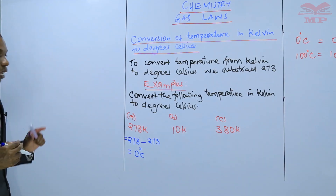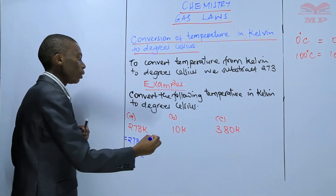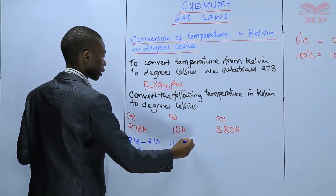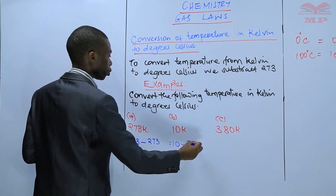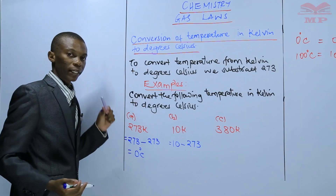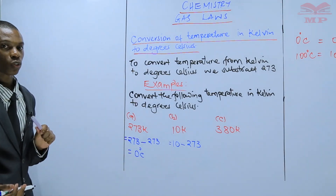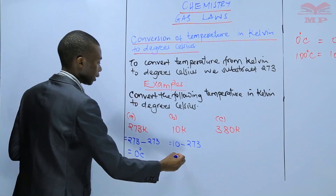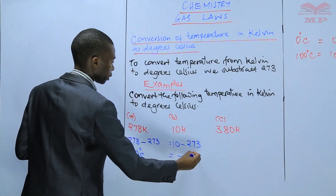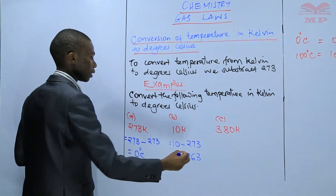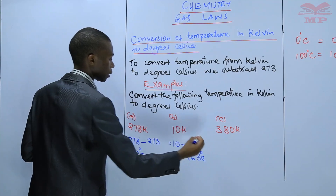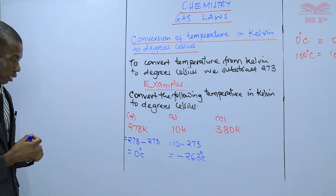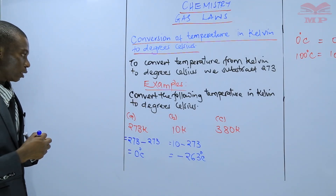Next, 10 Kelvin. This will be 10 minus 273, which gives you negative 263 degrees Celsius.